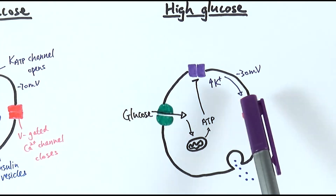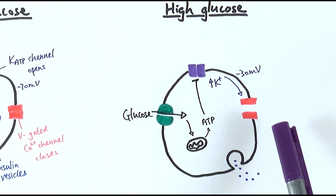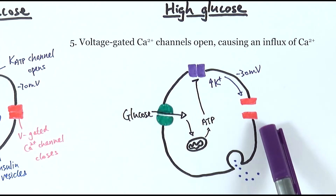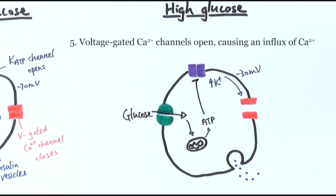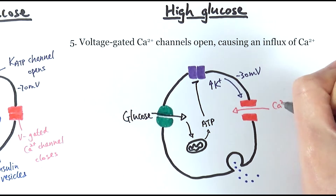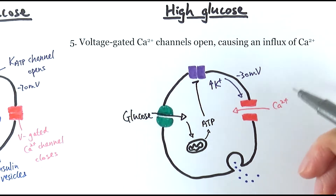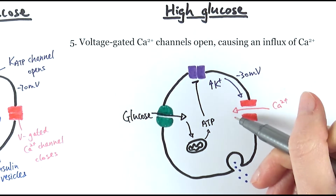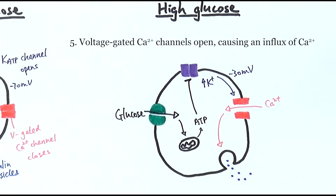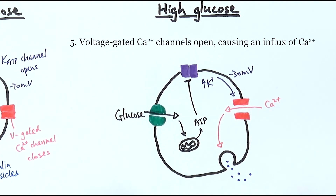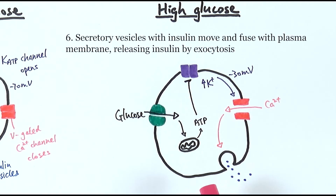Because of this depolarization, the voltage-gated calcium ion channels open and calcium ions can move into the cell. Because of this influx of calcium ions, the insulin vesicles move and fuse with the membrane, releasing the insulin by exocytosis.